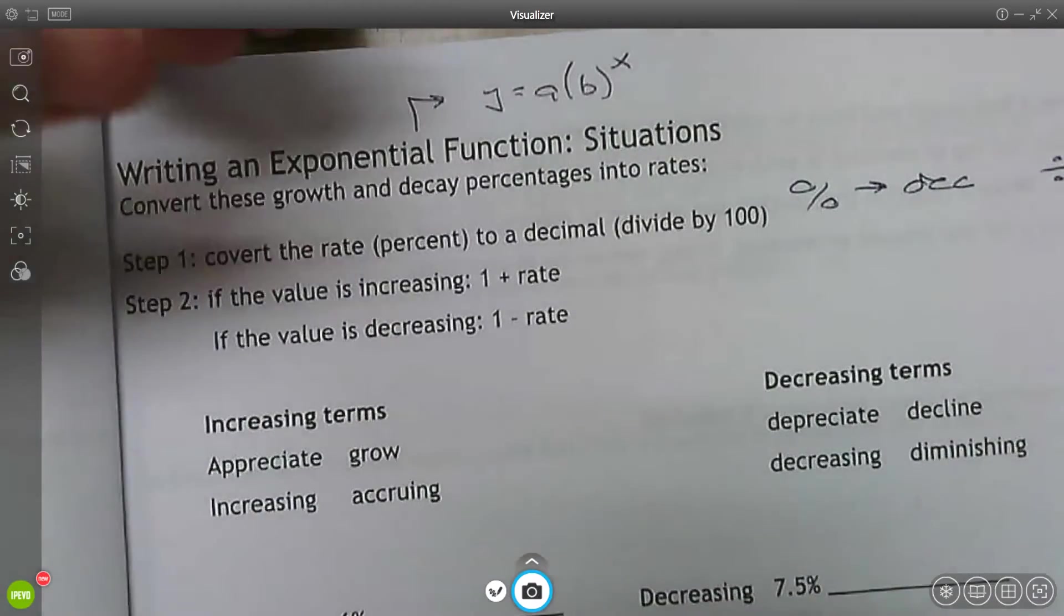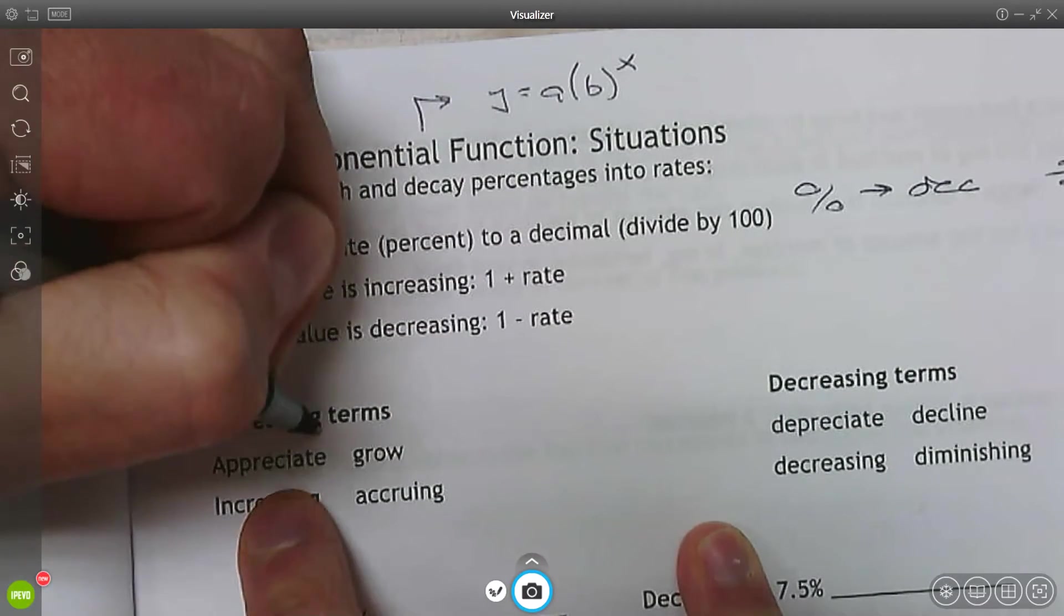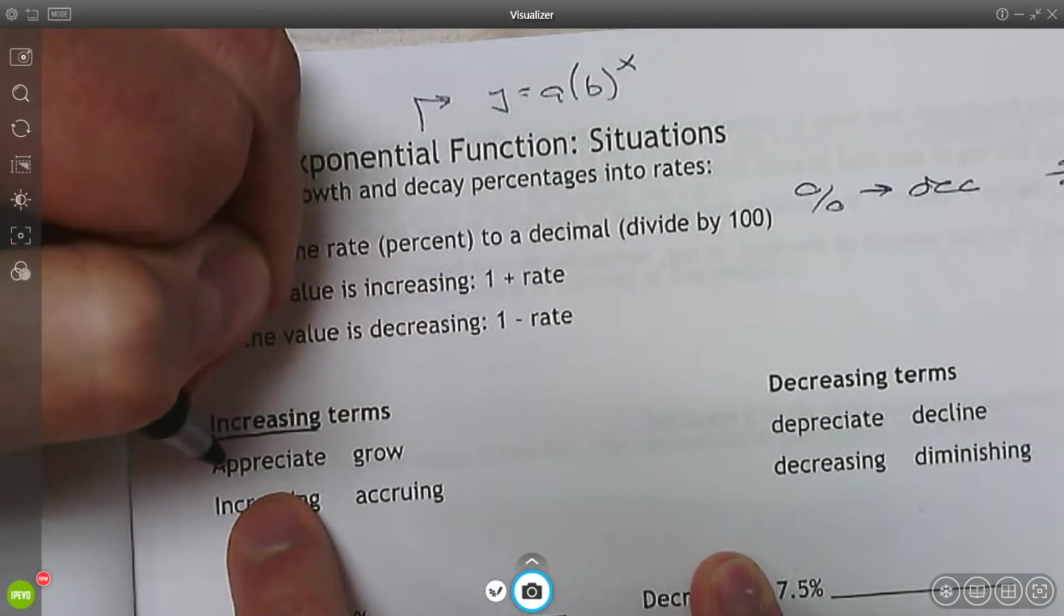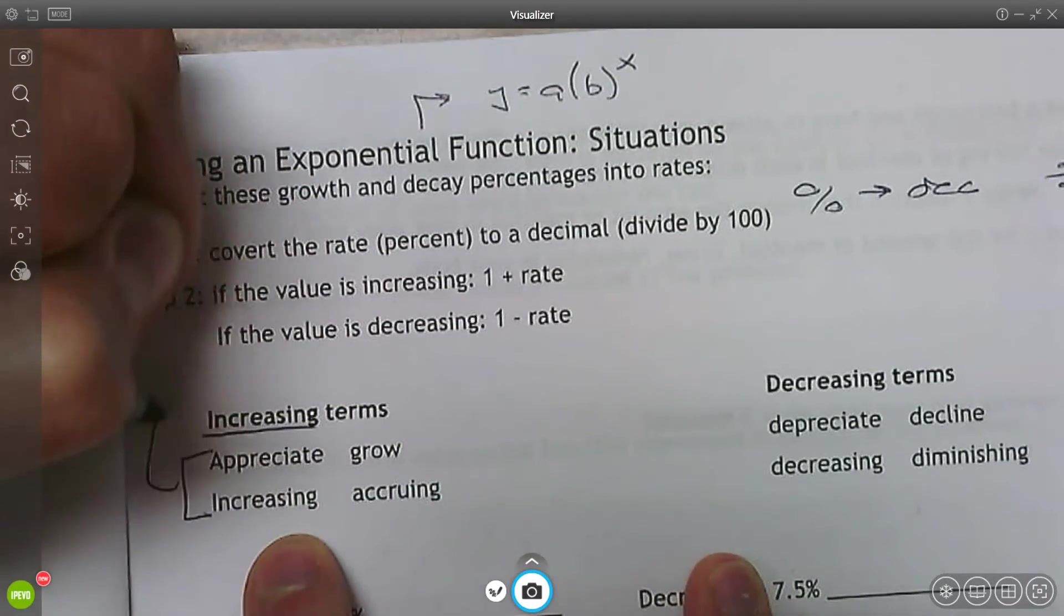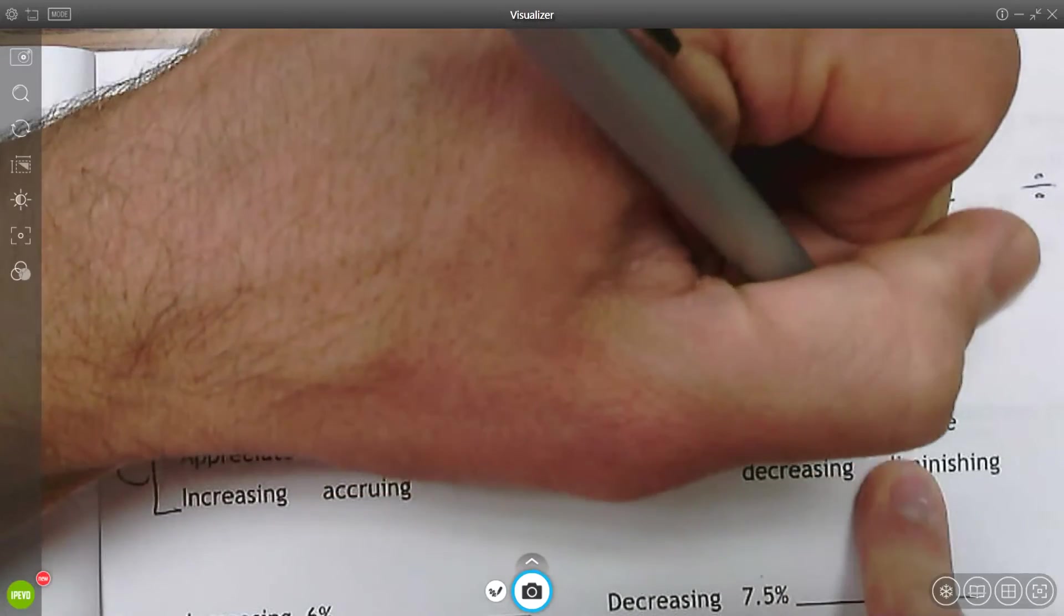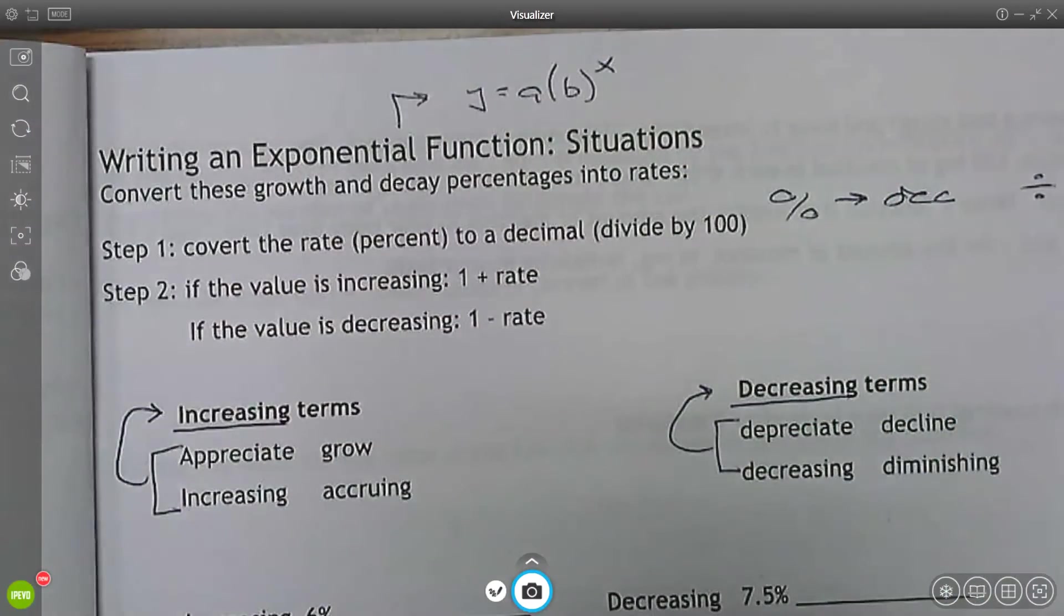All right. So here, just some terms that you want to be familiar with. Anything increasing could say increasing, accruing, growing, appreciating. Those words represent increasing. Decreasing terms: depreciate, decline, decrease, diminishing. If you see any of those terms, that means exponential decay.